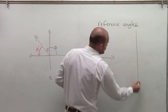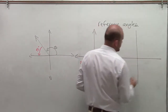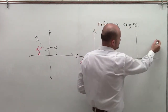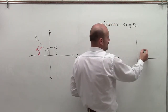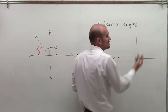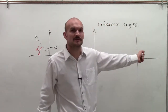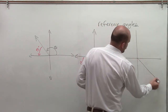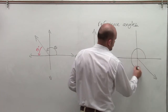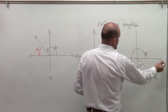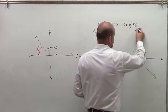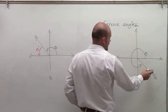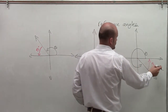We also have a reference angle for the fourth quadrant. But first, for the first quadrant: if I do an angle in the first quadrant, my reference angle is going to be that exact same angle, since any angle in the first quadrant is already going to be acute. So if I have an angle in the fourth quadrant, the acute angle from my terminal side to my horizontal axis is going to be right there.